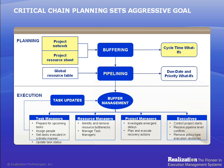Secondly, Concerto Pipeline Client performs multi-project scheduling and synchronization — that is, releases projects based on availability of the selected constraint. Typically the constraint is the resource with the highest load across all projects in the organization. Lastly, Concerto Web provides accurate task priorities across all projects that are determined by the buffer consumption calculated during daily buffer management runs.